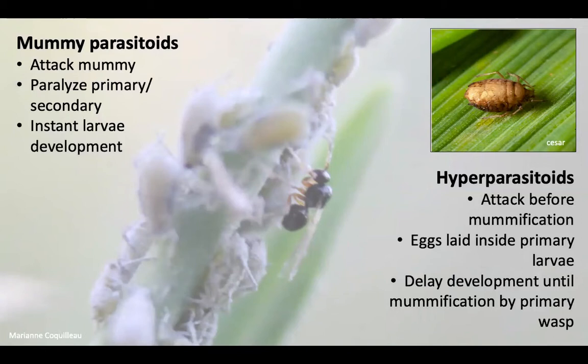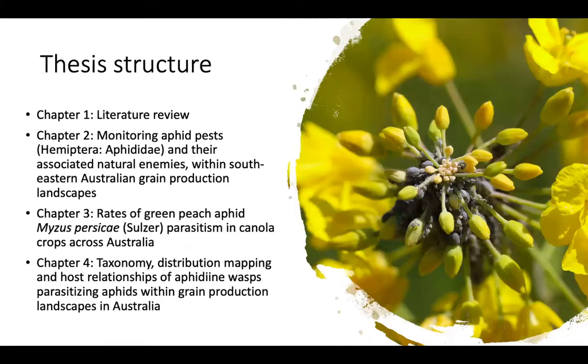Hyper parasitoids attack the aphid before it becomes mummified — they lay their eggs within the developing primary larvae and wait until mummification occurs, then develop themselves. However, mummy parasitoids attack an already formed mummy, paralyzing whatever wasp may be inside. They can paralyze both primary parasitoids and other secondary parasitoids, and then the larvae develop. That's a little background, but I'm going to move on to my thesis and discuss each of my research chapters.